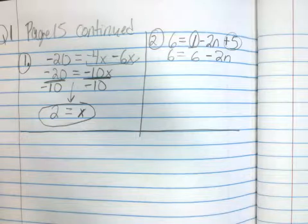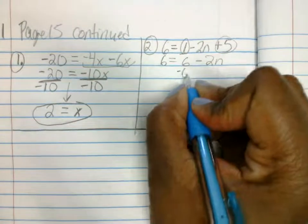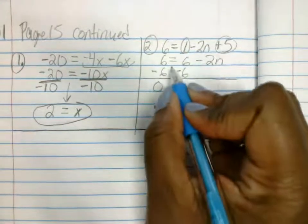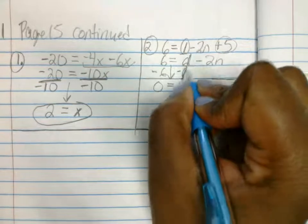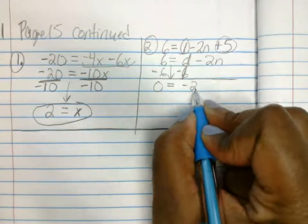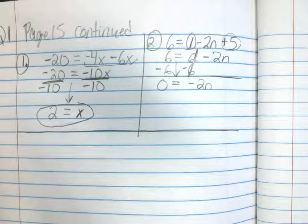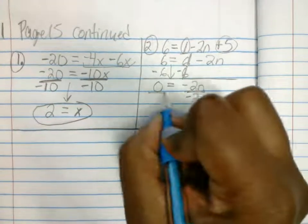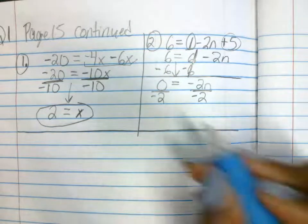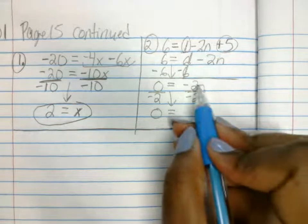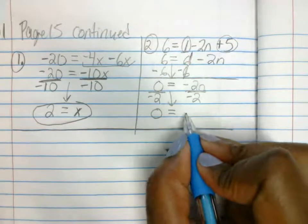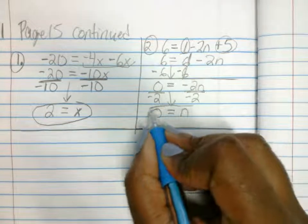Next, we're going to move the variables to the same side. Do we have variables on both sides? No. So now we're isolating the variable. What do we move first? This six. How do we move a positive six? We subtract six on both sides. Six minus six is zero, so we're left with zero equals negative 2n. Now divide both sides by negative two. Zero divided by negative two is zero. Negative two divided by negative two is one, so we're left with zero equals n. Raise your hand if you got that right.